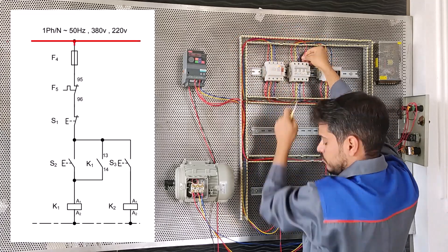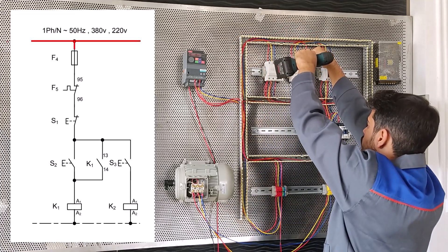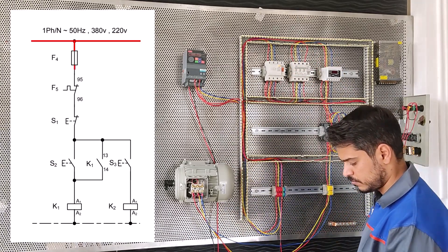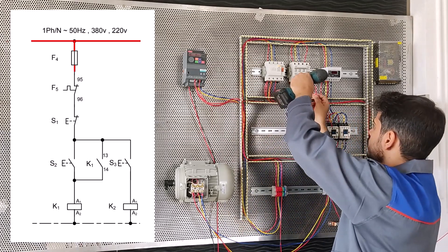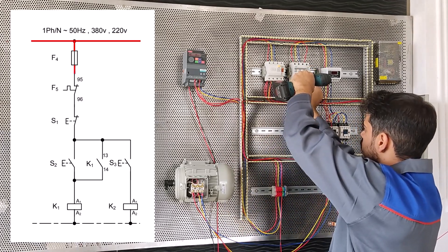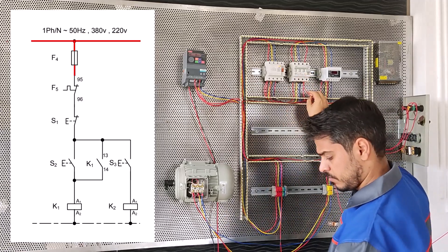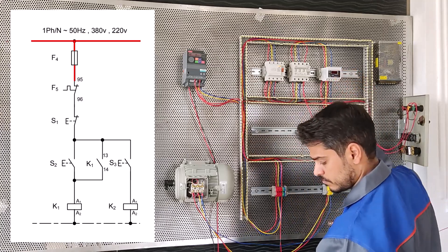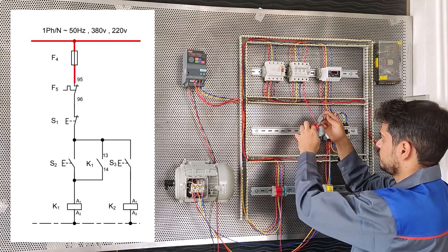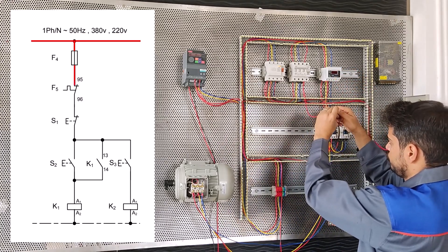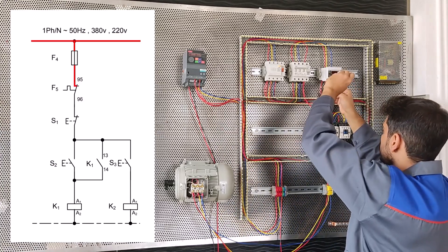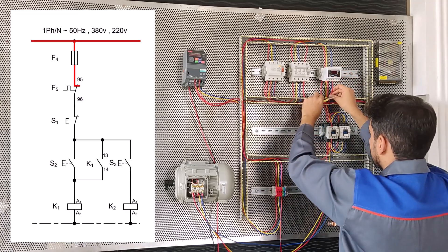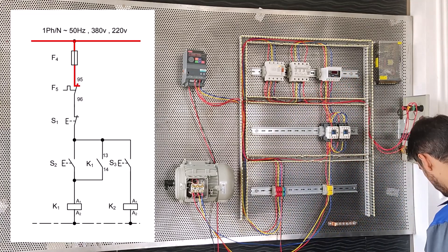Now we do the command circuit. First we connect the wire from the terminal to one MCB here. Now we connect from the MCB to the seat of the load control. We use load control instead of bimetal.